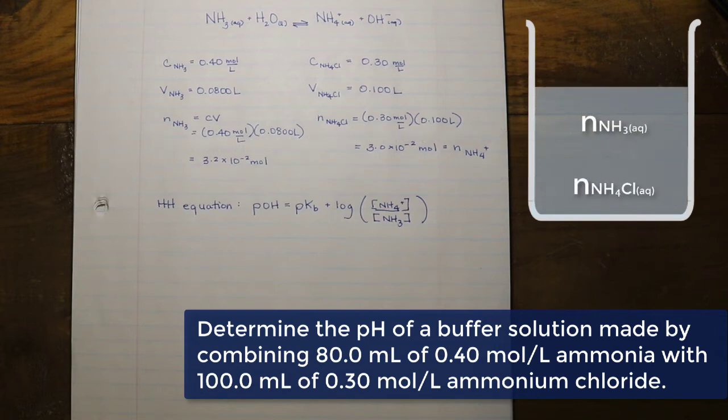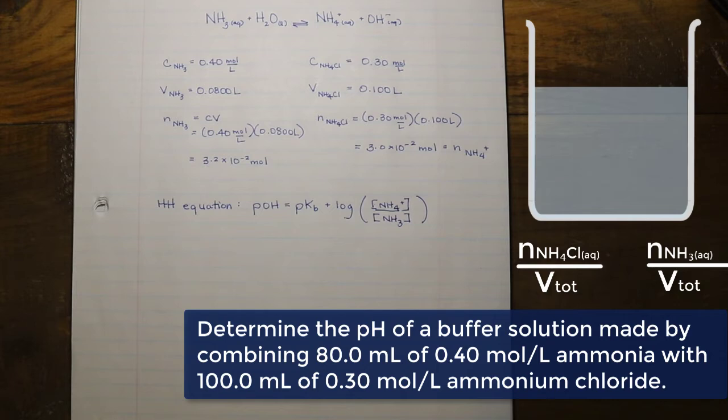Now you will have noticed that we calculated the number of moles of each. So we would, in order to use this version of the equation, have to figure out the total volume and then ultimately the new concentration of the ammonia and the new concentration of the ammonium chloride. Keep in mind, these initial concentrations are the concentrations of these solutions initially before they are mixed, not the concentrations in the reaction mixture.